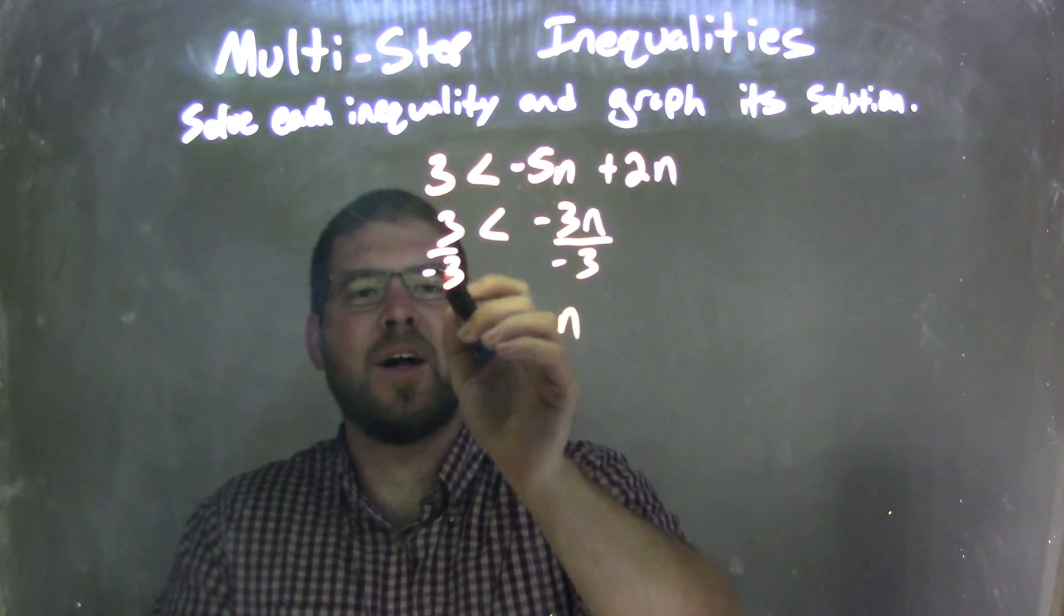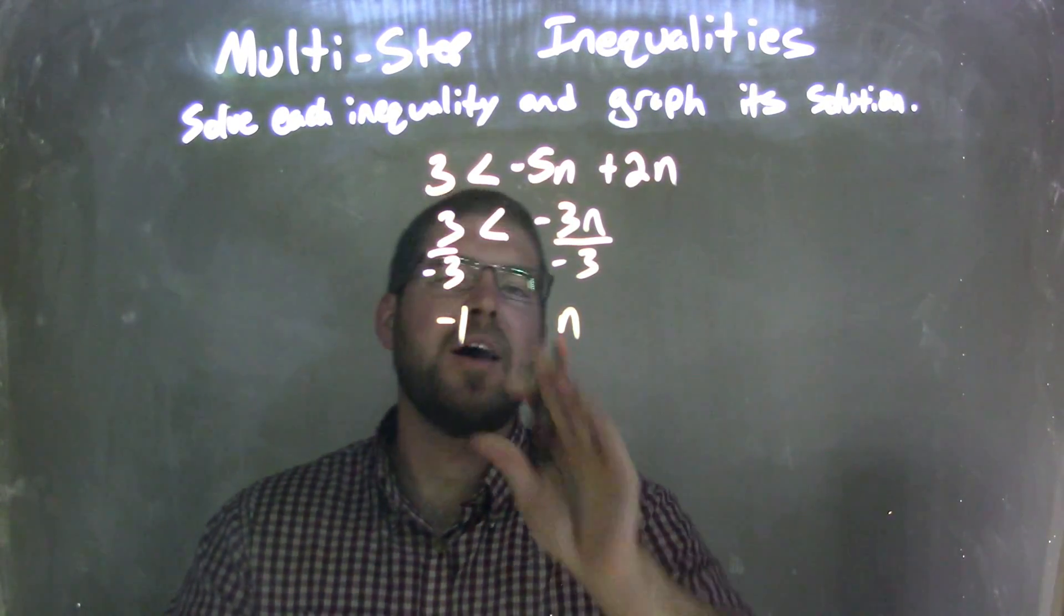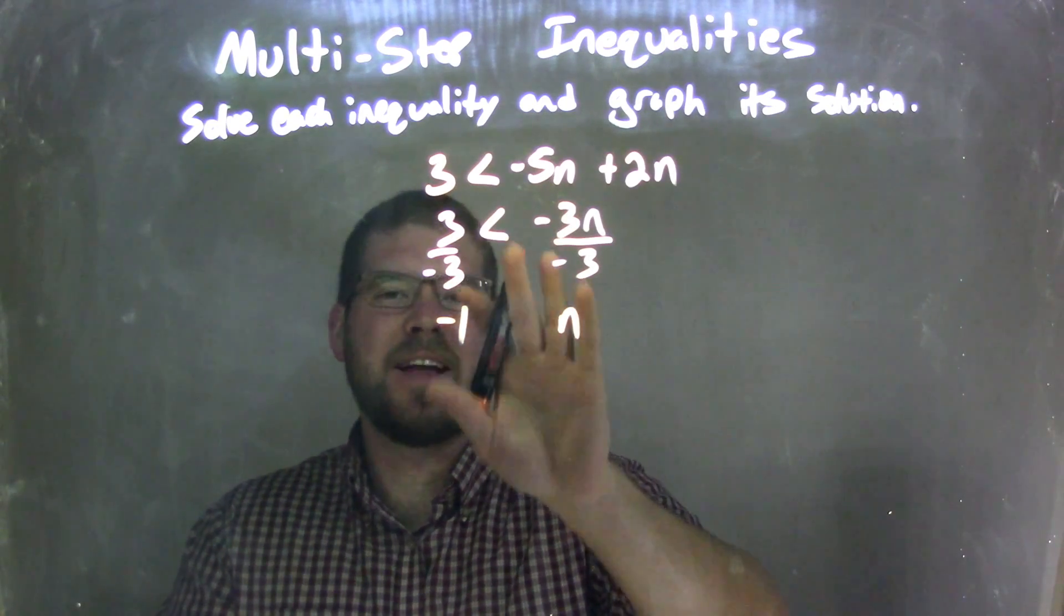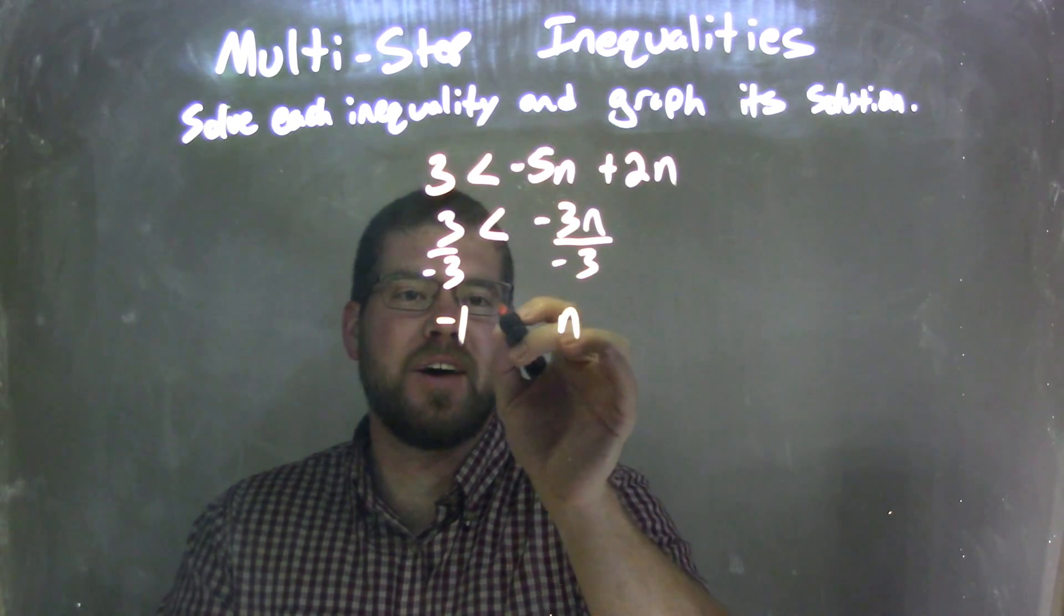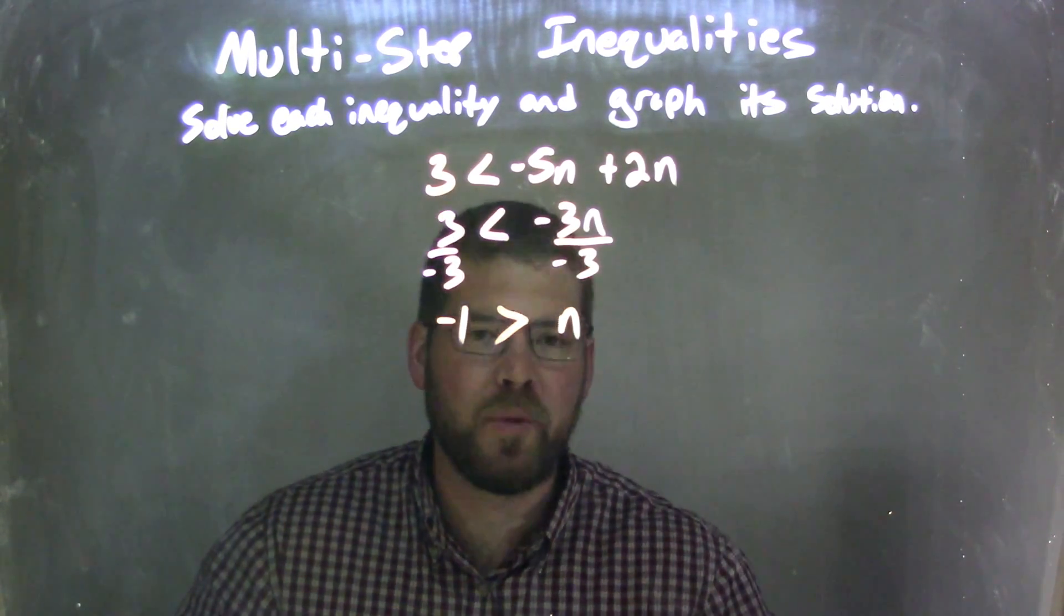When you divide by negative 3 to both sides, n is by itself on the right. 3 divided by negative 3 is negative 1 on the left. But since we divided over the inequality, that less than sign needs to be a greater than sign. So we have negative 1 is greater than n.